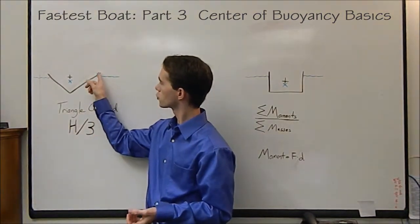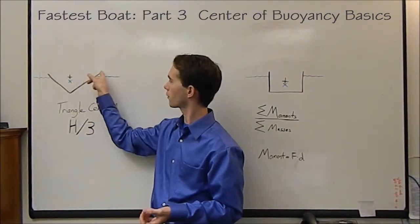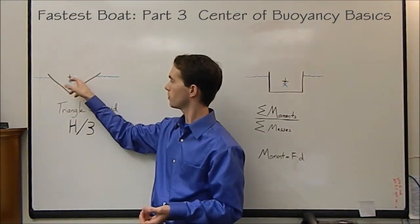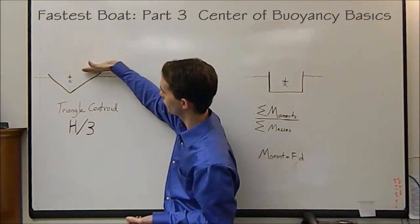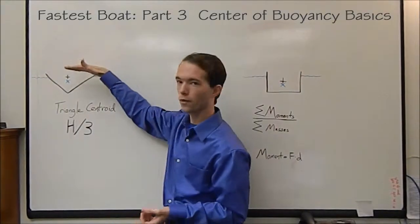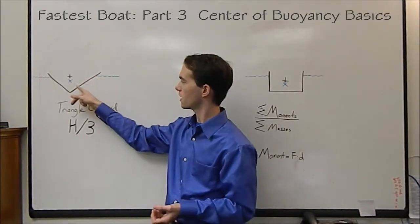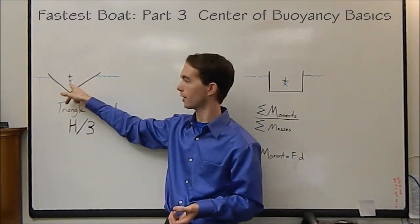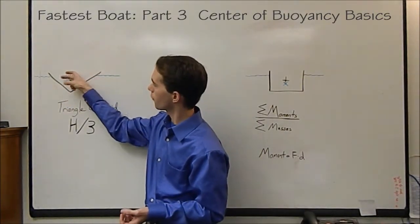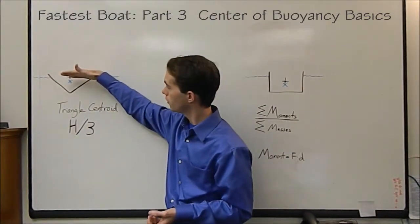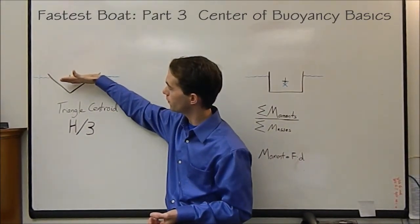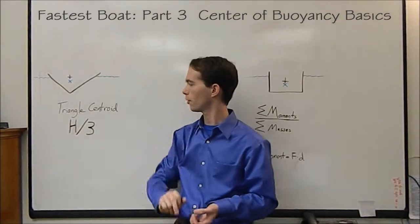So the triangle centroid, if we drew a line across the top of our boat shape here, it's going to be one third the distance from this. It has to be the base up here. It's one third the distance down from the base. The same thing with the center of buoyancy. In our case, we draw an imaginary line across the water line. That is our base of our triangle. We come down one third the distance that's remaining, and there's the center of buoyancy there.